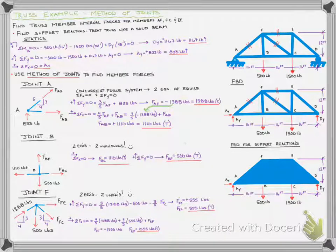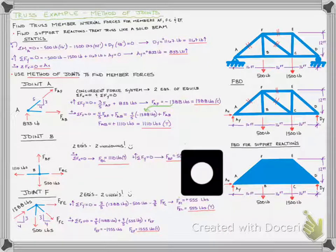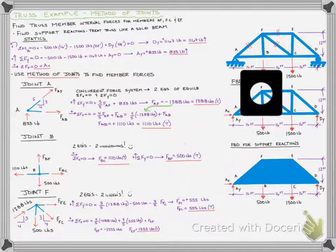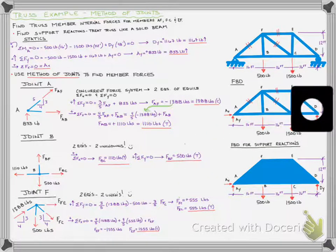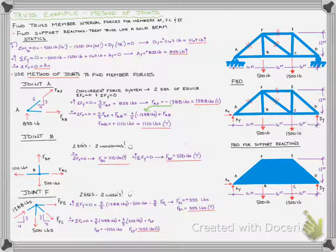We were able to just move our joint window around the member. If we wanted to keep moving it to find additional forces, we could. And that, folks, is how you use method of joints to find internal member forces throughout a truss. Now you can check out the method of sections videos if you want to see how to use that to solve for any member forces in a truss. Thanks for watching!